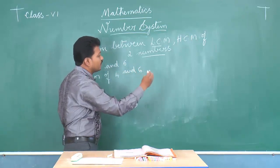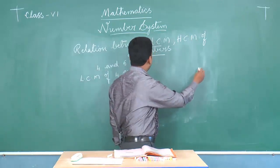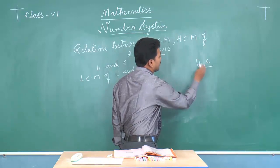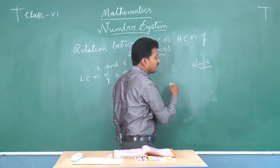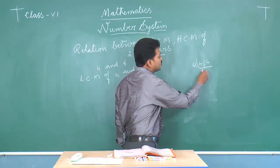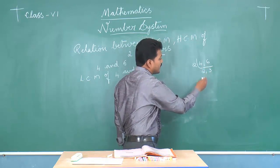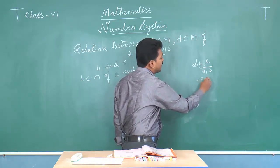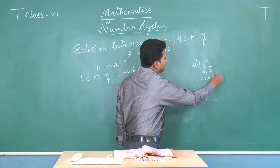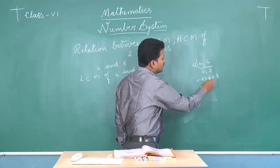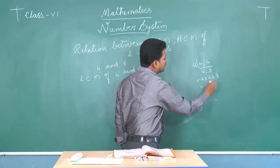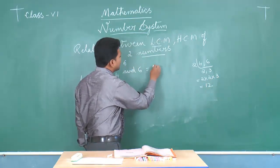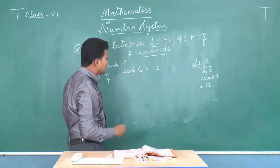We know the synthetic division method. Four and six — the common factor is two. Two twos and two threes. Two and three are co-primes. Let us multiply the remaining numbers: two twos are four, four times three is twelve. Therefore, LCM of four and six is equal to twelve.